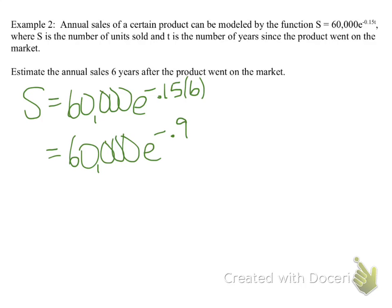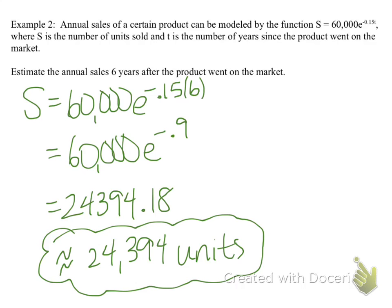Simplifying our exponent, -0.15 times 6 is -0.9. Plugging this into your calculator, you're going to get 24,394.18. We don't really know what these units are, but I'm going to presume that you can't sell a partial unit. So again, make sure that you're rounding correctly. And so the final answer would be 24,394 units.